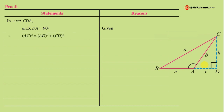Applying Pythagoras theorem to right angle triangle ADC: AC² = AD² + CD², i.e., the hypotenuse squared equals the sum of the other two sides squared. Substituting values: b² = x² + h². We call this equation (1).